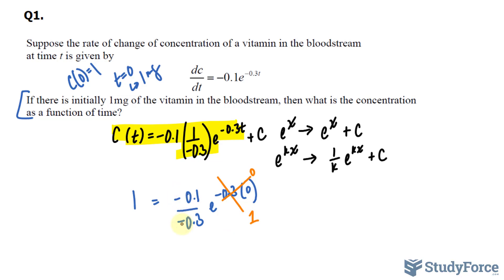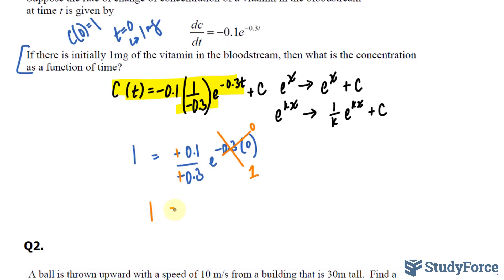These two, being both negative, make it positive, and that reduces down to 1 third. So we have 1 is equal to 1 over 3 plus our constant c. Rearranging for c, we bring that over. We have 1 minus 1 third, which is 2 over 3, and that's our constant. We can apply this to our equation. c at t is equal to 1 over 3 e to the power of negative 0.3t plus 2 over 3. What you see here in red is the concentration as a function of time.